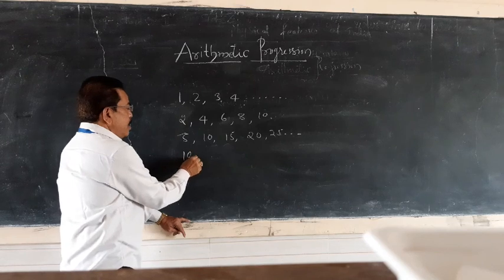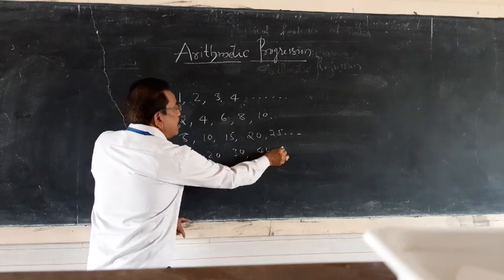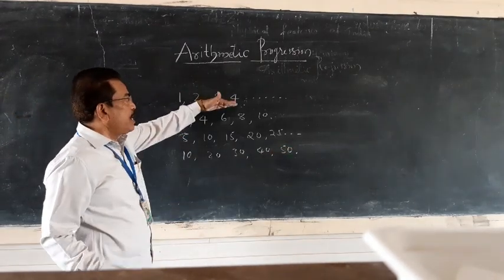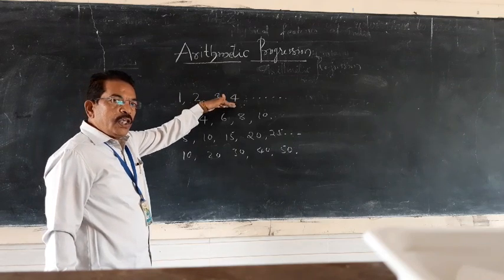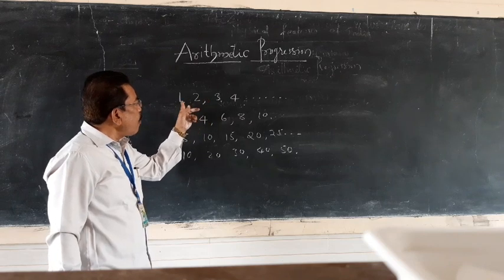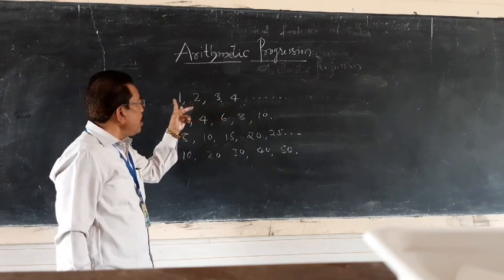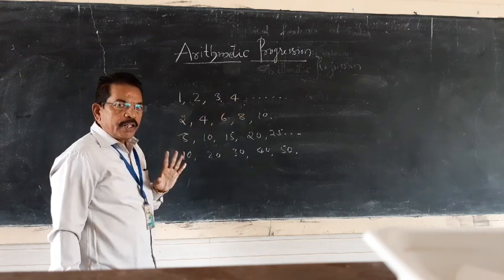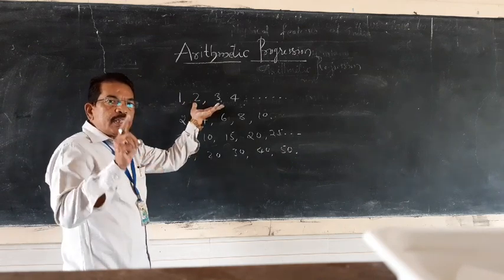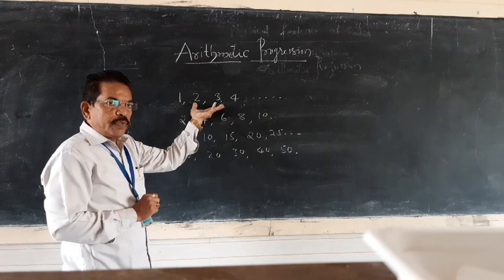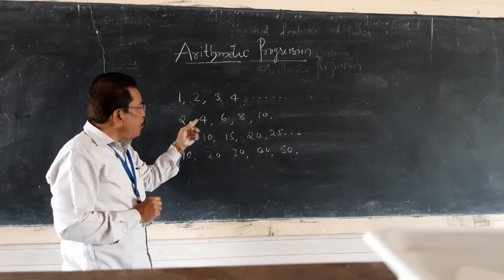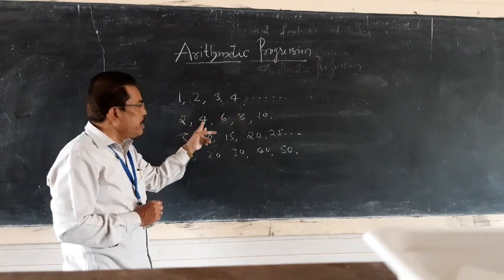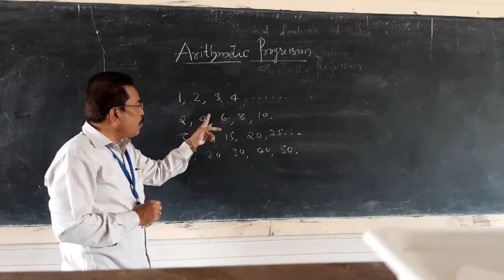Then 10, 20, 30, 40, 50. When you observe these sets of numbers, you conclude that these numbers are written according to some rule. For example, 1+1=2, 2+1=3, 3+1=4 — every number has a common difference of 1. In the set 2, 4, 6, 8, 10, the common difference is 2: 2+2=4, 4+2=6, and so on.